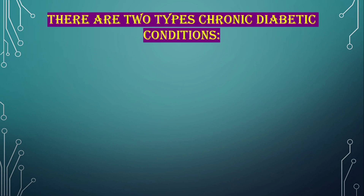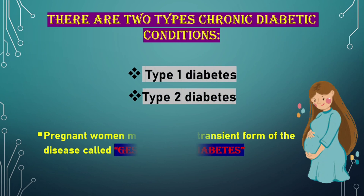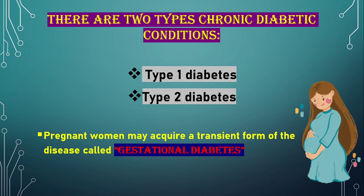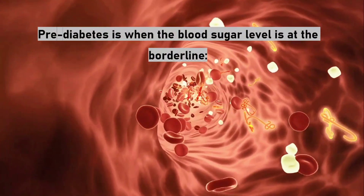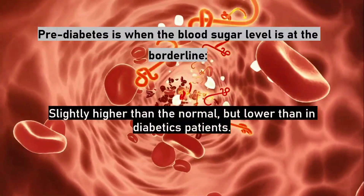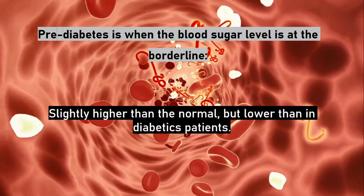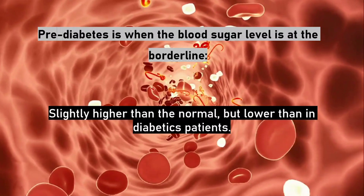There are two types of chronic diabetic conditions: Type 1 diabetes and Type 2 diabetes. Pregnant women may acquire a transient form of the disease called gestational diabetes, which usually resolves after the birth of the baby. Pre-diabetes is when the blood sugar level is at the borderline — slightly higher than normal but lower than in diabetic patients — and may or may not progress to diabetes.